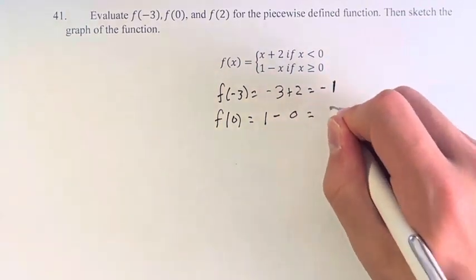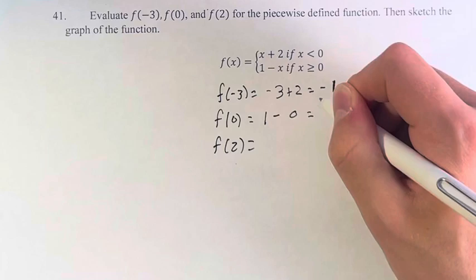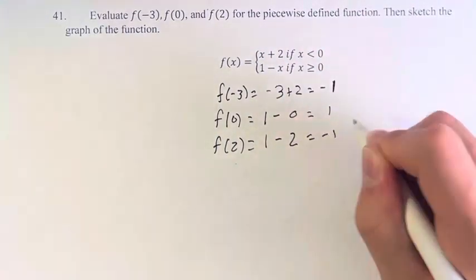And f of 2, finally, is also greater than or equal to 0, so we're using 1 minus x, 1 minus 2 is negative 1.